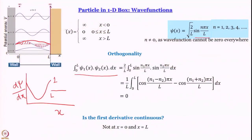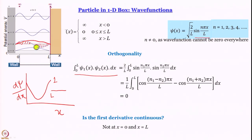We are discussing particle in a 1D box. We have succeeded so far in learning about the wave functions of a quantum particle in a 1-dimensional box. The wave functions have turned out to be sine waves, and only some are allowed. The wave function is psi of x equal to root over 2 by L, sine n pi x by L, where n equals 1, 2, 3, 4 and so on — positive integers. This set of wave functions has been normalized, which is how we got root 2 by L, and we have also established that they are orthogonal to each other.